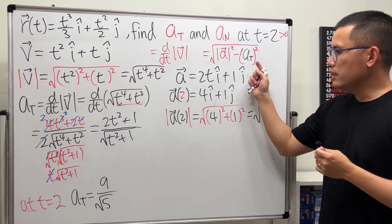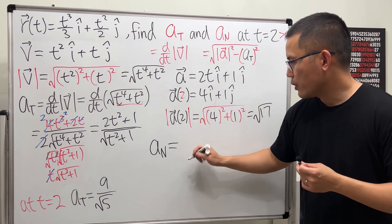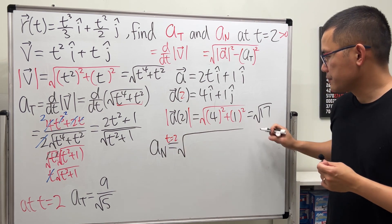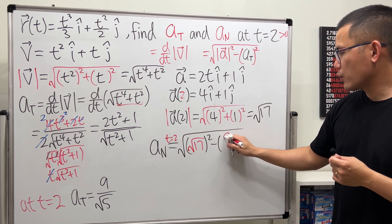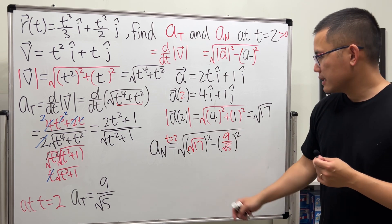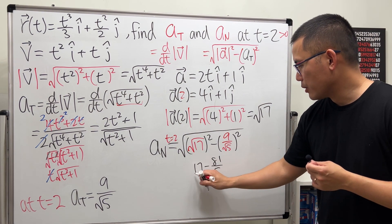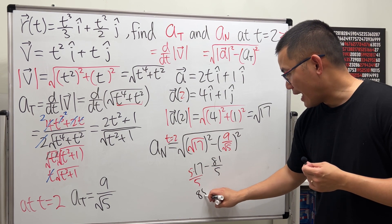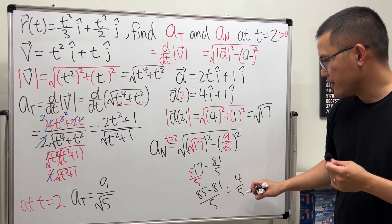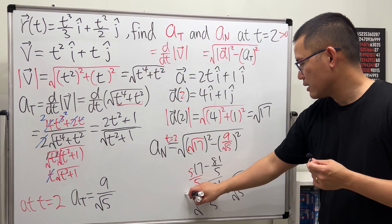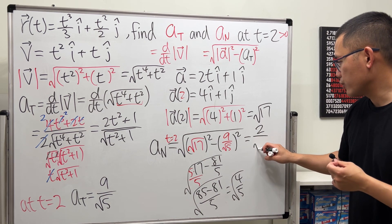Now for Aₙ at t = 2, we compute the square root of |a|² minus Aₜ²: that's √(17 − (9/√5)²) = √(17 − 81/5). Getting a common denominator: 85/5 − 81/5 = 4/5. So Aₙ = √(4/5) = 2/√5.